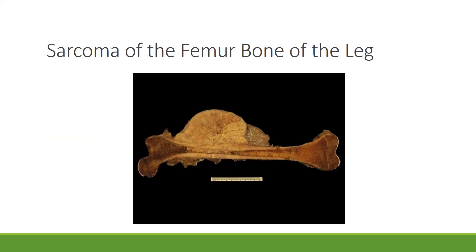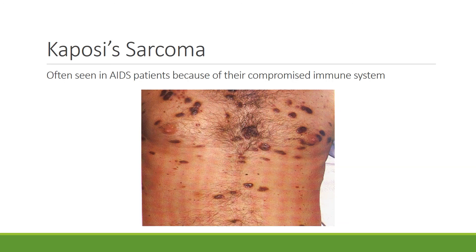One of the terms was sarcoma. This picture shows you what a sarcoma of the femur bone looks like — the femur is the bone in the upper part of the leg, or the thigh. This is an example of Kaposi's sarcoma, which is a sarcoma seen in AIDS patients because they have a compromised immune system.